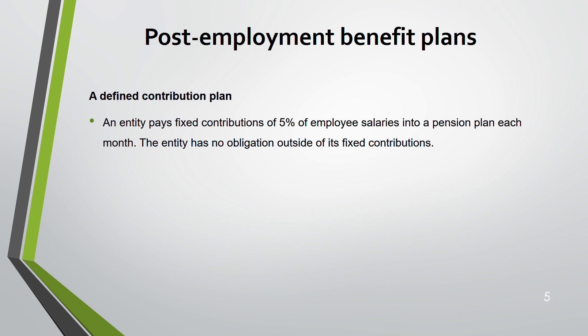Defined contribution is a small portion of what we cover — about 5% — and the remaining 95% is on the defined benefit plan. Defined contribution plan is easy to understand because the contributions are fixed. You take a fixed percentage from the employee's salary and pay it into the pension plan — for example, 5% of salary each month.